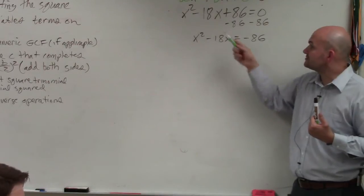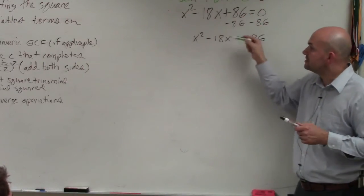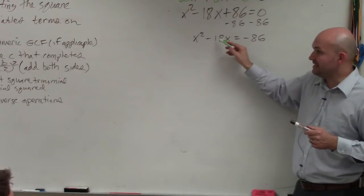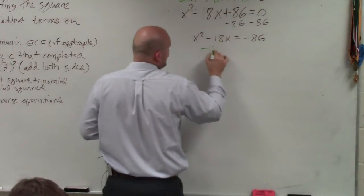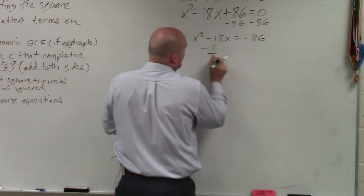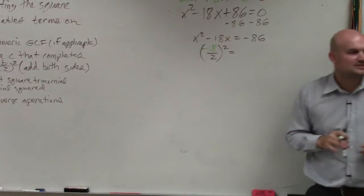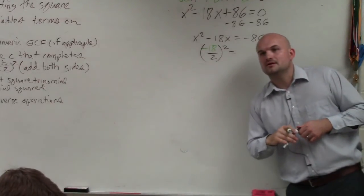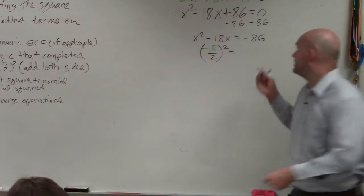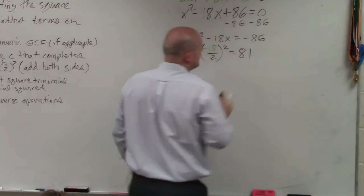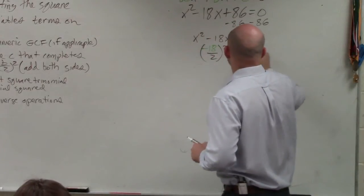So once you have it in this form, this is still my b, because I could just add the 86 in that format. So now what I'm going to do is take b divided by 2 and square it. So I'll take negative 18 divided by 2 and square it. Negative 18 divided by 2 is negative 9, squared is going to be positive 81. And then, let's make this green.